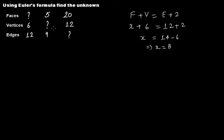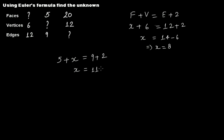In the second case, faces is 5, vertices is unknown (call it X), and edges is 9. So 5 plus X equals 9 plus 2, which gives X equals 11 minus 5, so X equals 6. There are 6 vertices.